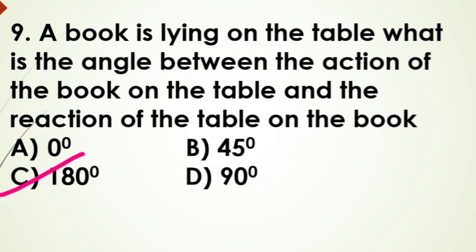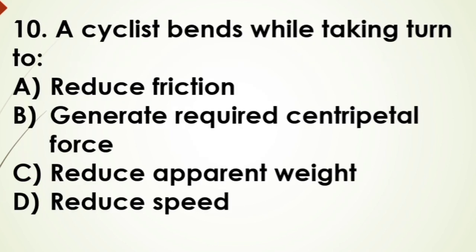Now the 10th question: a cyclist bends while taking turn to - options: A) reduce friction, B) generate required centripetal force, C) reduce apparent weight, D) reduce speed. And the answer is option B, generate required centripetal force.